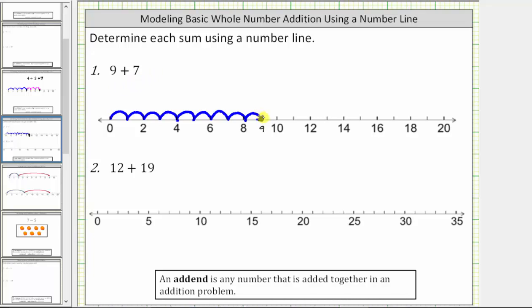And then because we have plus seven from nine, we move seven more units to the right. We have plus one, plus two, plus three, plus four, plus five, plus six, and plus seven.